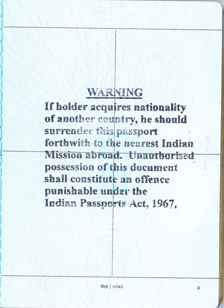Persons domiciled in the territory of India as on 26 November 1949 automatically became Indian citizens by virtue of the relevant provisions of the Indian Constitution coming into force, with most constitutional provisions coming into force on 26 January 1950. The Constitution of India also made provision regarding citizenship for migrants from the territories of Pakistan which had been part of India before partition.